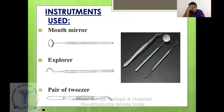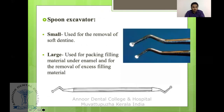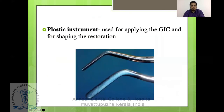The instruments used in ART are very common and inexpensive. Basic instruments include: mouth mirror, explorer, and tweezers — these are a must. Another instrument is the spoon excavator: the small one is used for removal of soft dentin, and the large one is used for packing filling material under the enamel and for removal of excess filling material.